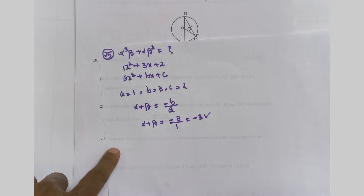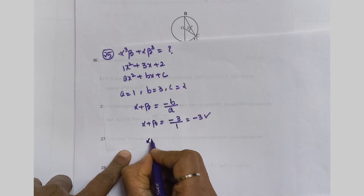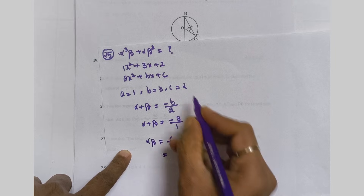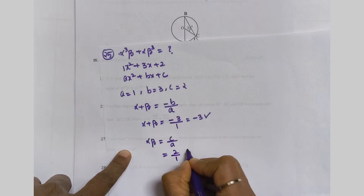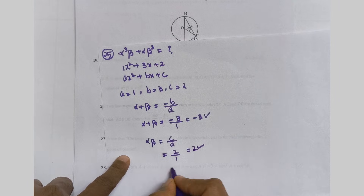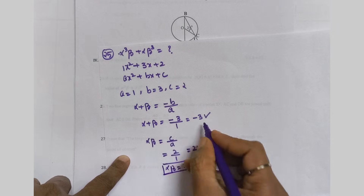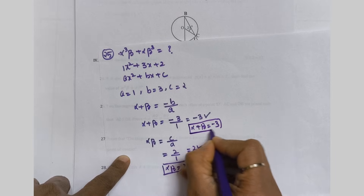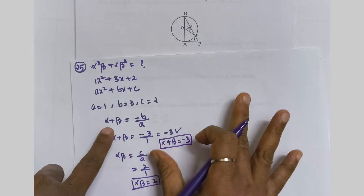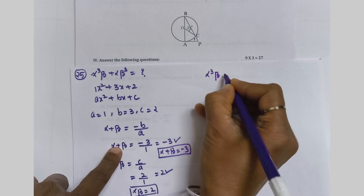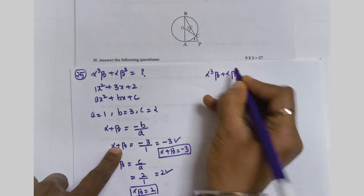Next we find the product of the zeros. Alpha times beta equals C by A, which is 2 by 1, so alpha·beta = 2. So we have alpha plus beta = −3 and alpha·beta = 2. Keep these aside. Now we will find the value of α³β + αβ³.